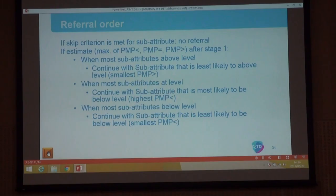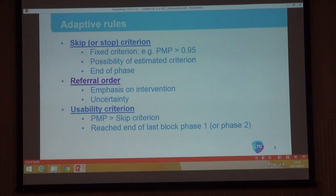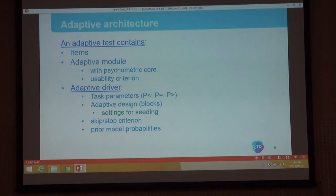So there is a reversal of the reasoning — the focus is on where the student needs help. For reportability — when can we actually report a result — the same skip criterion applies: if a student has been skipped because we are certain enough, we can report. When you reach the last item of a block in phase one, we can report the main attributes; at the end of phase two we can report the sub-attributes.